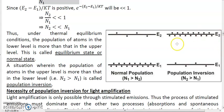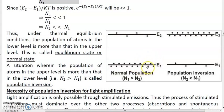This state of population inversion is not going to happen on its own, because by nature atoms want to remain in the lower level E1. So if you leave a material on its own without doing anything, there will always be more atoms in the lower level than in the upper level. To achieve light amplification, we must achieve population inversion. To achieve population inversion, we have to supply a huge amount of energy to the system, so that we take a huge number of atoms from the lower level E1 and put them into the upper level E2, achieving n2 greater than n1.